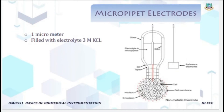The next type is the micro pipette electrode. It is a non-metallic electrode which consists of a glass micro pipette whose tip diameter is about one micrometer. The micro pipette is filled with an electrolyte, usually 3 mL of potassium chloride, which is compatible with cellular fluid. A thin flexible wire of chloride silver, stainless steel, or tungsten is inserted into the stem of the micro pipette. The friction between the wire and the stem and the fluid surface tension hold the micro pipette on the wire.